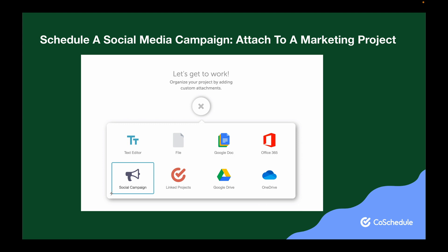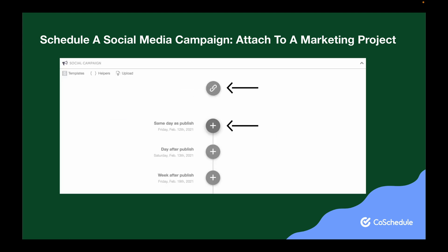Open the project and then select social campaign attachment to add it to the project. Next, add the link to the blog post or content you want to promote using the link button on the top. This will automatically add the URL to your social messages in this campaign. Then add messages on specific days using the plus signs.